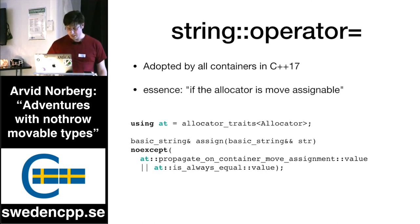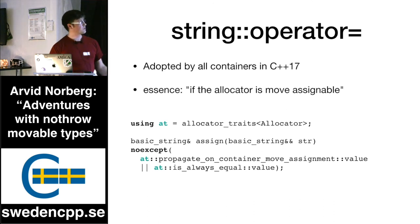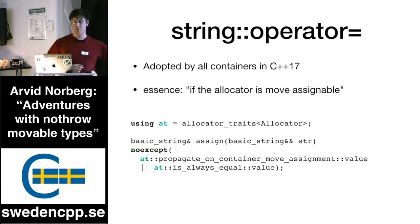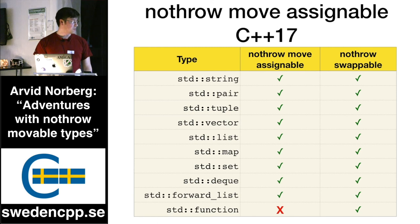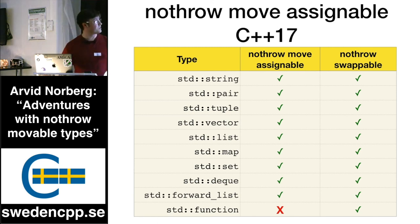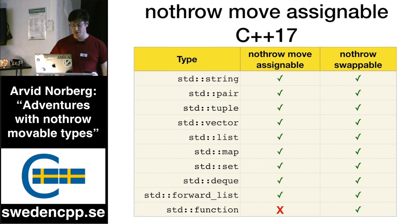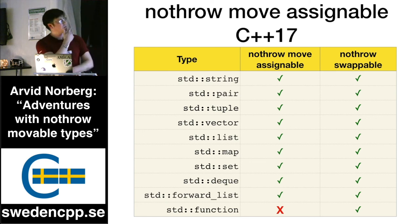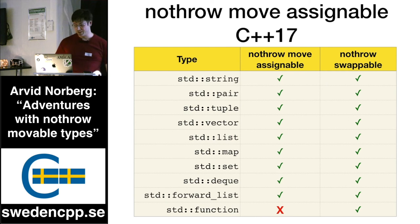If we look at what things look like for C++17, this condition was applied to all containers. So in C++17 all these are green, which is really great, except `std::function` is still not nothrow move assignable.